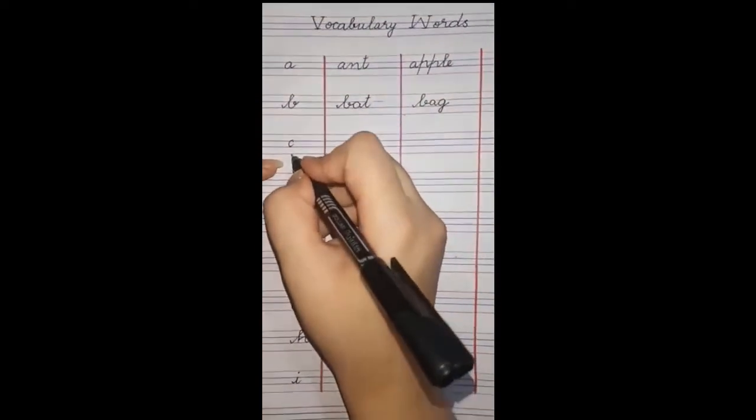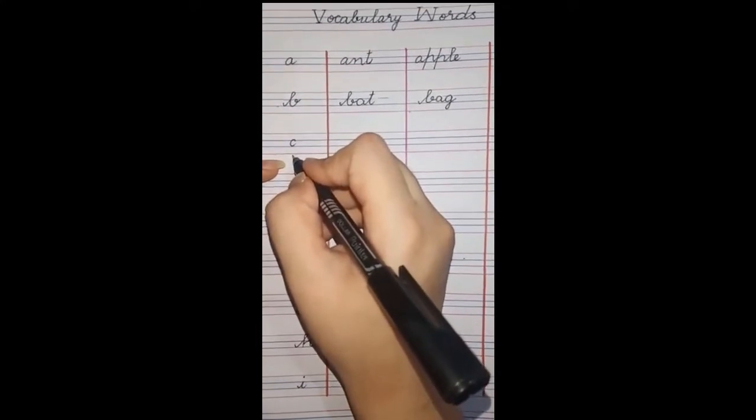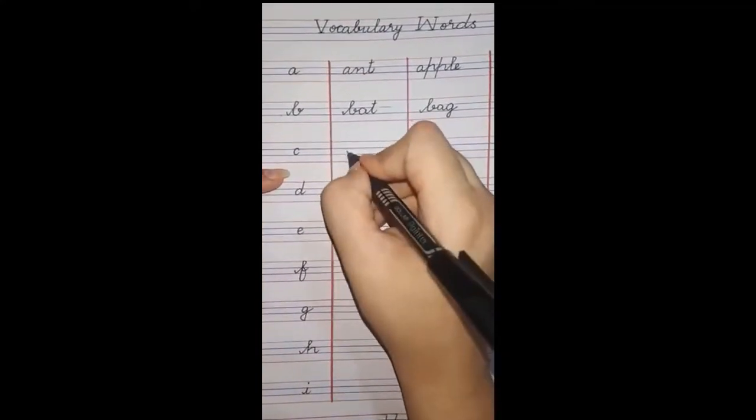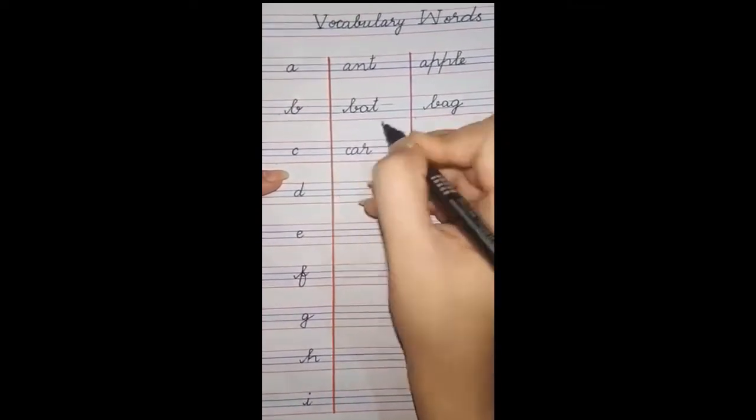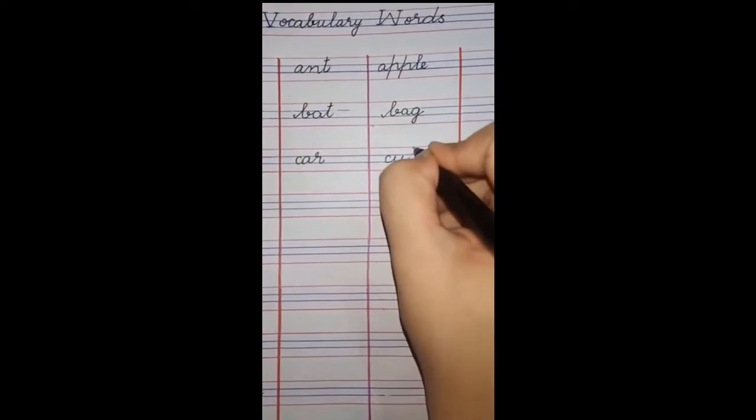Next letter is C. C se two friends make karen. C - cat, C - cup, C - cake, C - car. Hum yahan par write karenge C - car, C - cup.